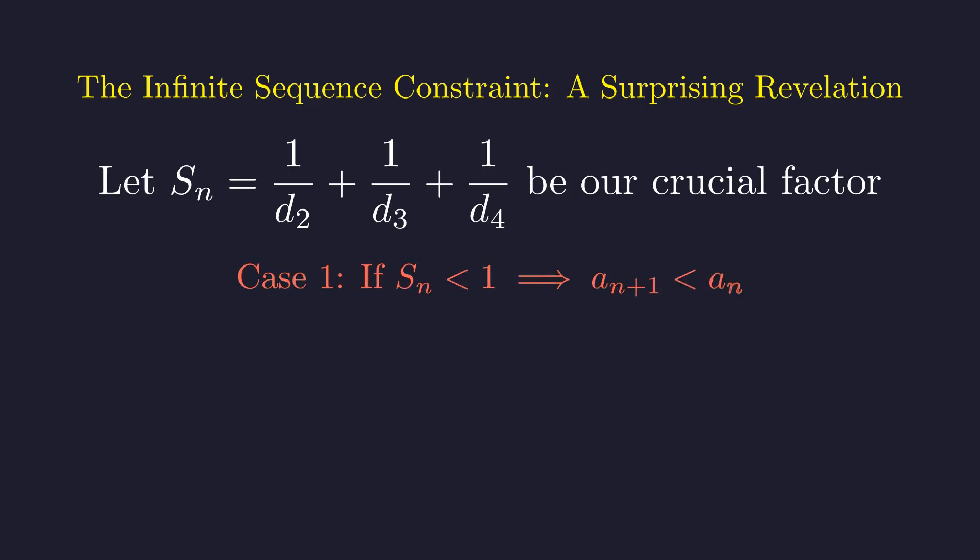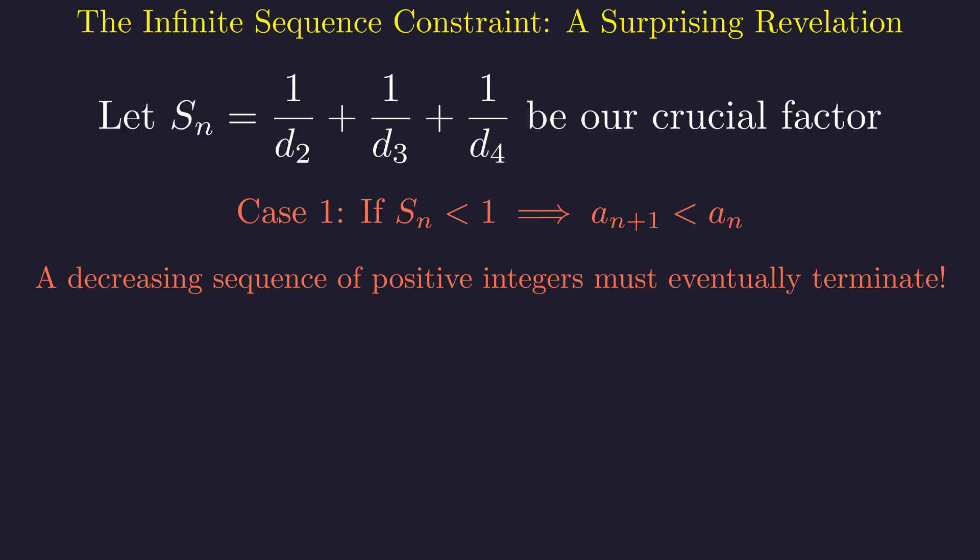First, consider the case where S_n is less than 1. This implies that a_{n+1} is strictly less than a_n. A strictly decreasing sequence of positive integers must eventually terminate. This contradicts the condition that the sequence is infinite. Therefore, it is not possible for S_n to be less than 1 for all large n.